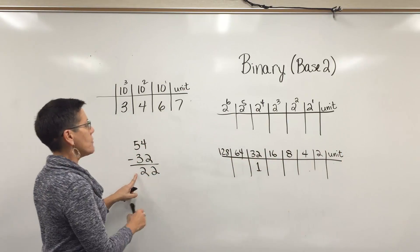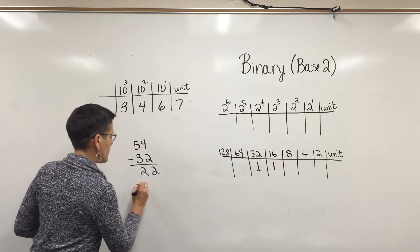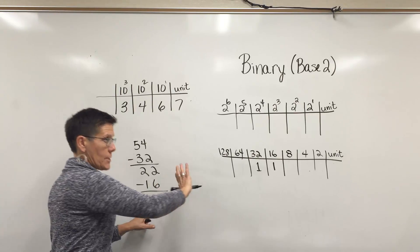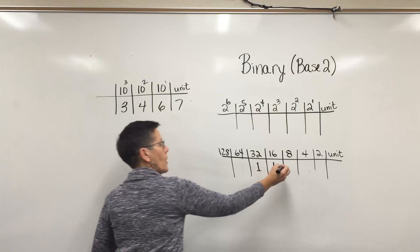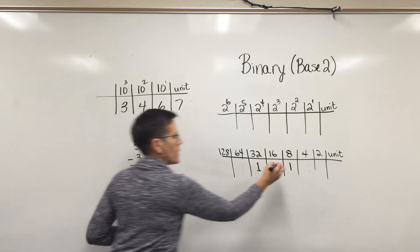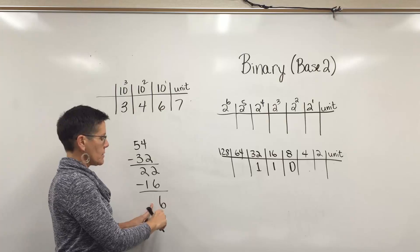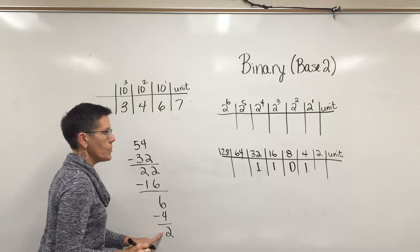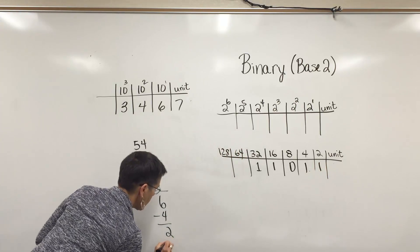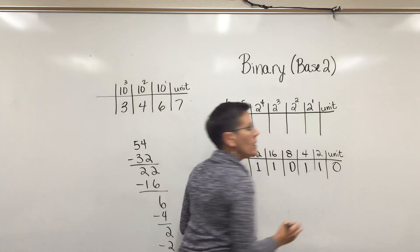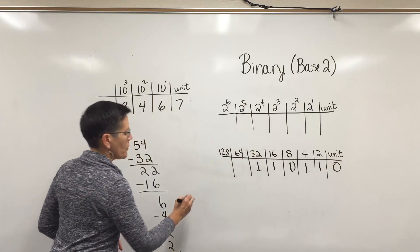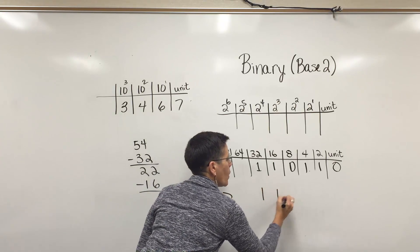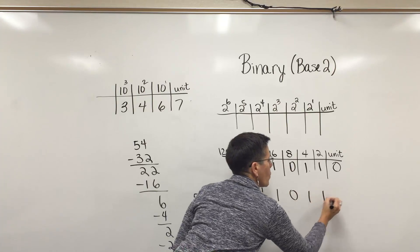I'm going to subtract 32 from 54. When I do, I have 22 units to try to get out of these positions here. With 22 left here, I can get a 16 out of 22. When I subtract that, I have six units left to place over here. No eights will come out of six, but a four will, and I'm left with two. I can get a two out of this and I should have no units. The number 54 in base 10 is the same thing as the number 110110.